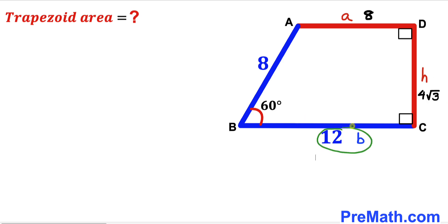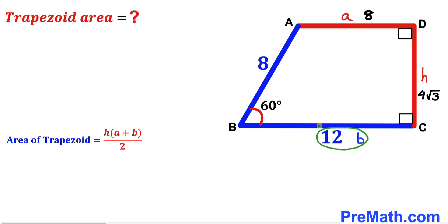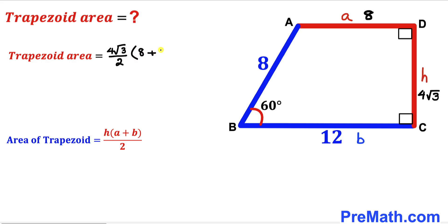Now for our final step: we calculate the area of trapezoid ABCD using the formula Area equals H times (A plus B) all over 2. Our height is 4 times the square root of 3, base a is 8, and base b is 12. Filling in: Area equals 4 times square root of 3, times (8 plus 12), all over 2.